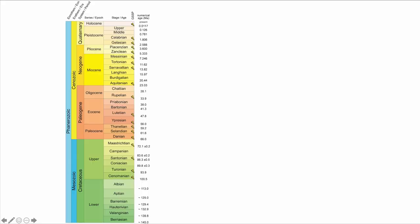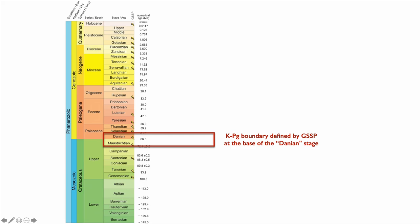I'd like us to look at one case study of how this is done. The case study I selected is the base of the Danian stage. The reason I selected it is because it also means the base of the Paleogene, which means the base of the Cenozoic.